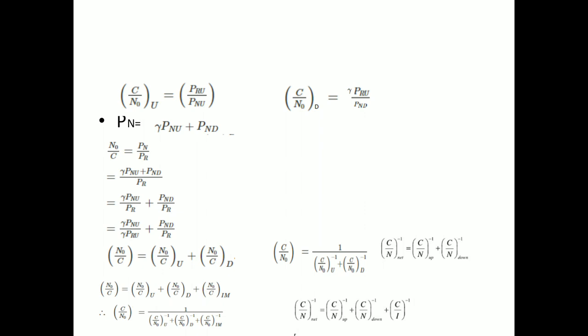There is one more noise in a satellite communication link — intermodulation noise. Intermodulation noise occurs because the system works in the nonlinear region. To avoid this, we normally apply a backoff to keep the system in the linear region. If intermodulation noise is present, the equation becomes: N/C total equals N/C uplink plus N/C downlink plus N/C intermodulation, and equivalently C/N total inverse equals C/N uplink inverse plus C/N downlink inverse plus C/N intermodulation inverse.